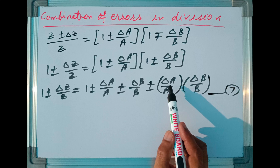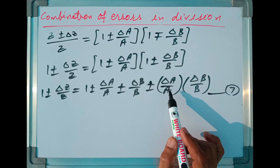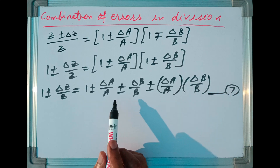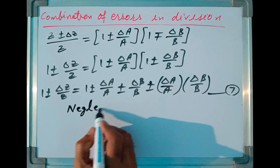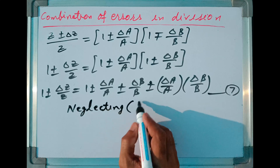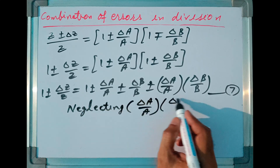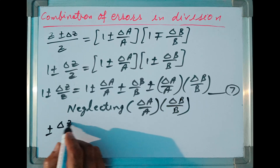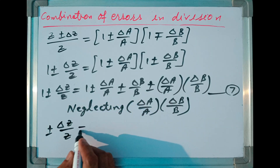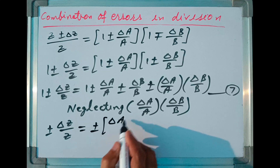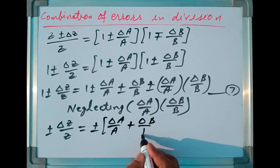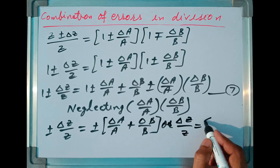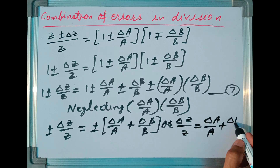In this equation, Delta A and Delta B are small quantities. When divided by A and B respectively, they become still smaller. When we multiply these two results, the answer becomes negligible in comparison to other quantities. So neglecting the last term — Delta A upon A into Delta B upon B — I can write plus or minus Delta Z upon Z equal to plus or minus Delta A upon A plus Delta B upon B. Cancelling the 1 from both sides and removing the plus or minus, we get Delta Z upon Z equal to Delta A upon A plus Delta B upon B.